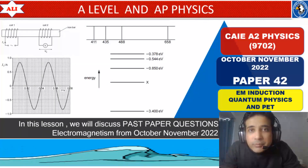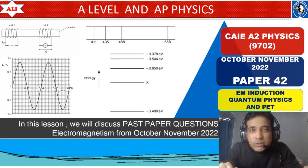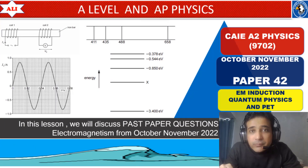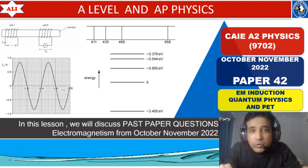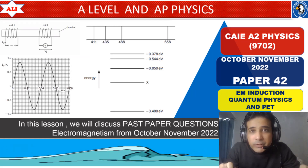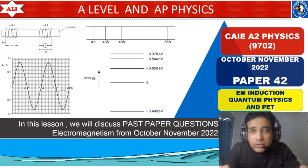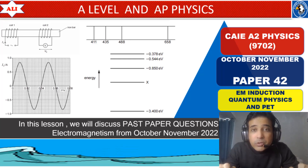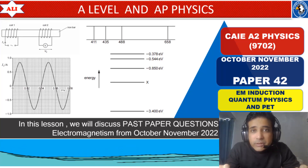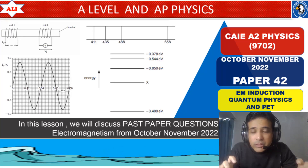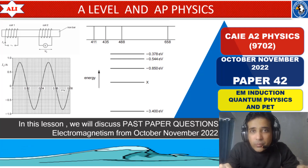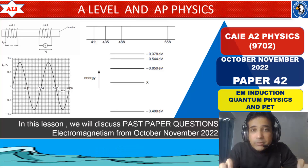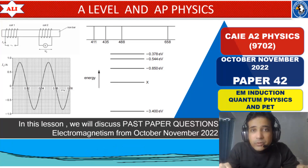Welcome to A-Level and AP Physics. In today's lesson, we will discuss past paper questions from October-November 2022 Paper 4 Variant 2. We will discuss questions on Electromagnetic Induction, Quantum Physics, and PET in detail so you can improve your conceptual understanding of these topics and have a better understanding of these questions.